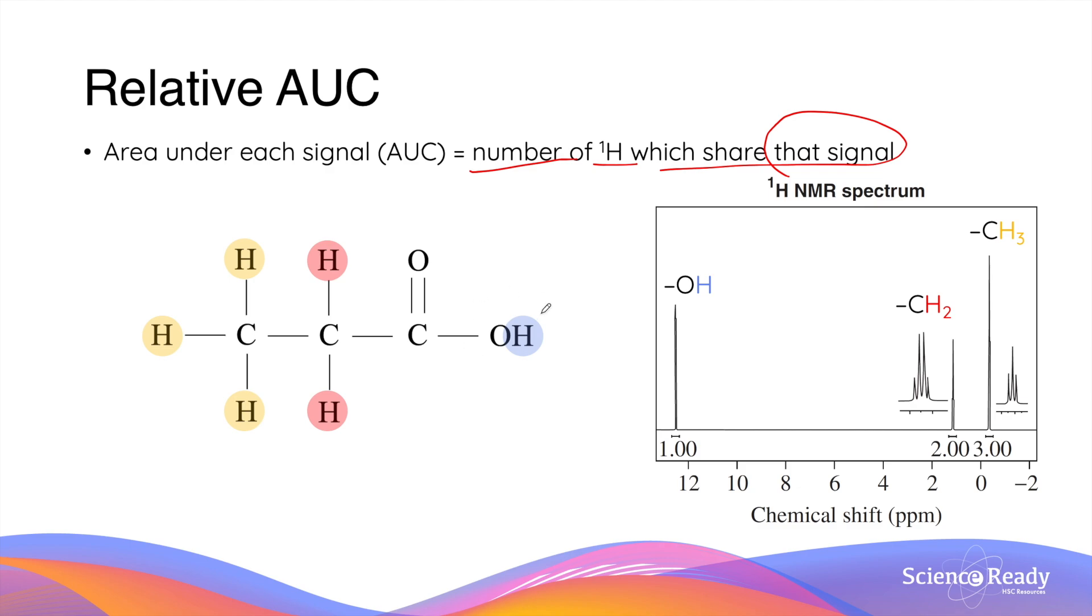In the blue environment, there's only one proton. In the red environment, there are two protons, and in the yellow environment, there are three protons.